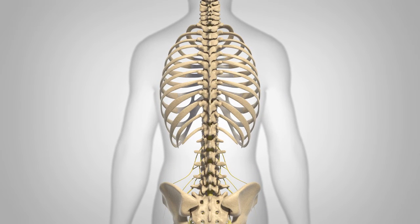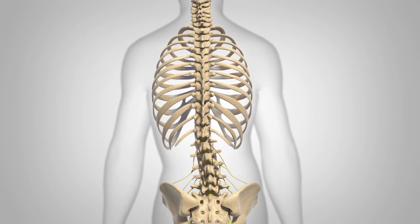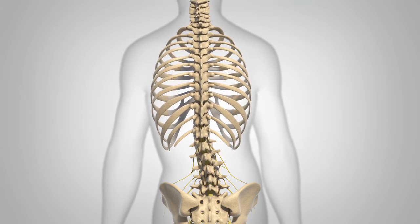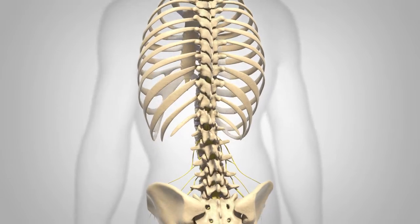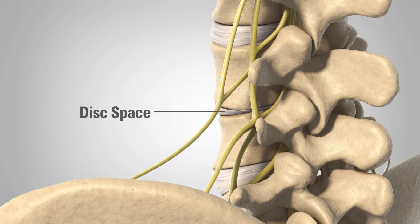Adult degenerative scoliosis is a condition where a right, left, or lateral curve develops in a previously straight spine, secondary to advanced degenerative disc disease. This curvature occurs as a result of deterioration or degeneration of the disc space and joints in the back of the spine.